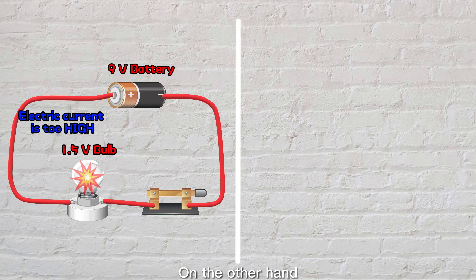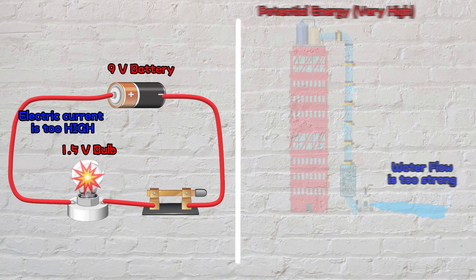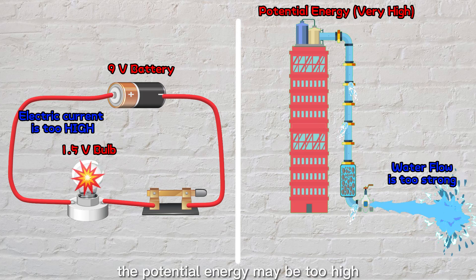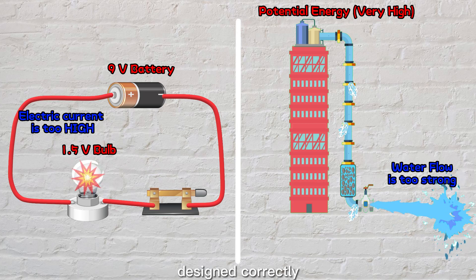On the other hand, if you use a 9 volt battery to a bulb that requires only 1.5 volts to operate, you might burn the bulb. Just like if you place the water tank very high, the potential energy may be too high, and the water flow is so strong that it causes the pipe to burst if the water system is not designed correctly.